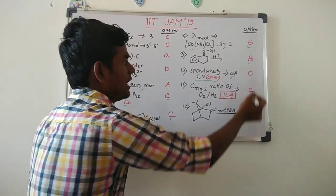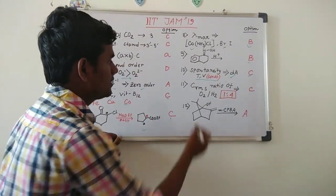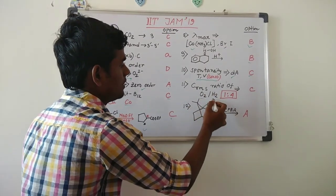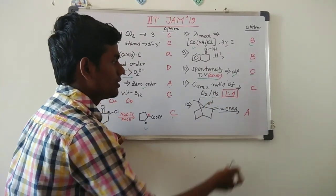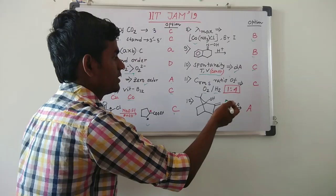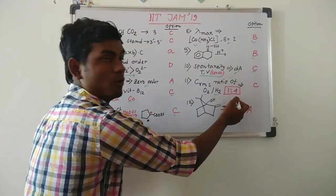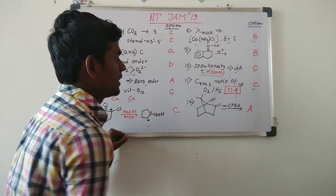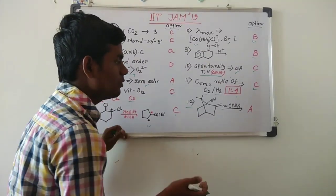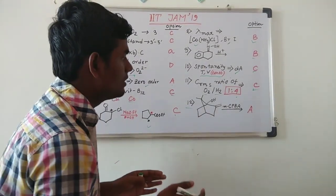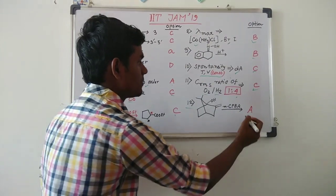Then they have asked CRMS ratio of oxygen by hydrogen. You know the formula: RMS velocity is root over 3RT/M, so it will be 1 is to 4, the option is C. And they have asked one question, it's a little bit tricky, we are not quite sure about right now, but we think that it will be option A.